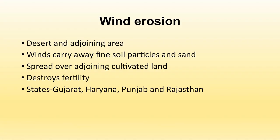Wind erosion takes place mainly in desert areas or areas adjoining deserts. In these areas, wind blows at a very fast pace and carries away fine soil particles, spreading them over adjoining areas. This destroys the fertility of the adjoining area wherever the sand particles are deposited. Wind erosion takes place mainly in the states of Gujarat, Haryana, Punjab, and Rajasthan of India.